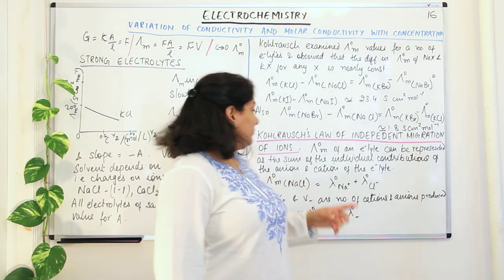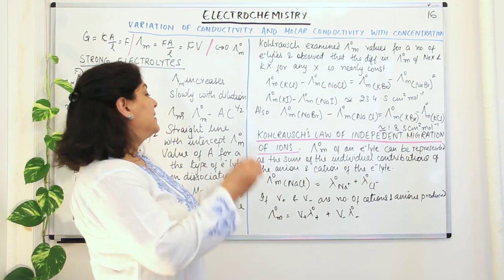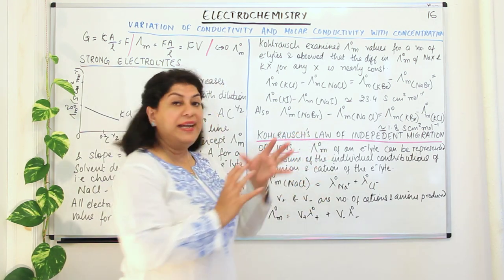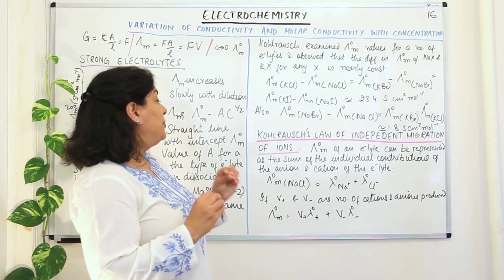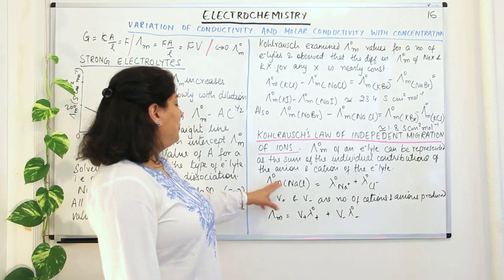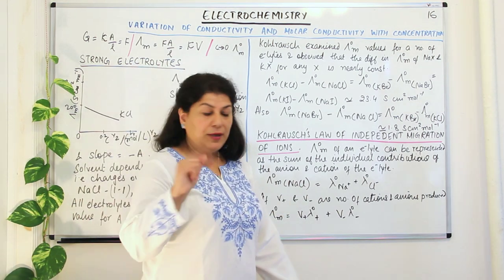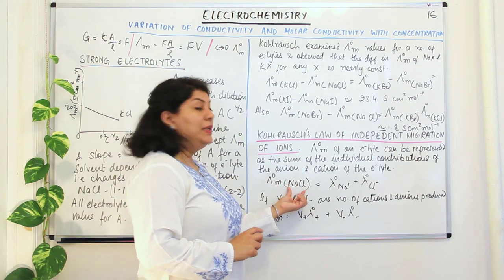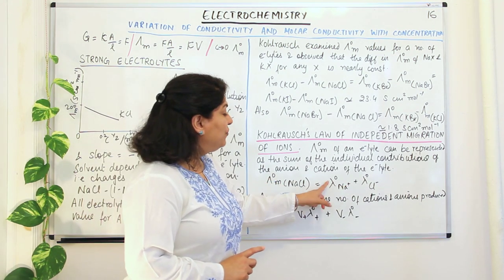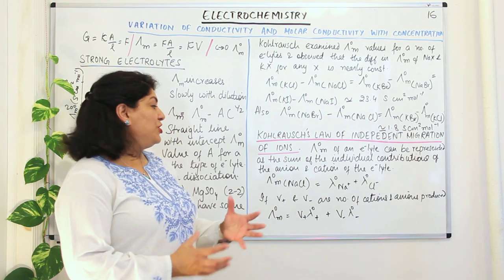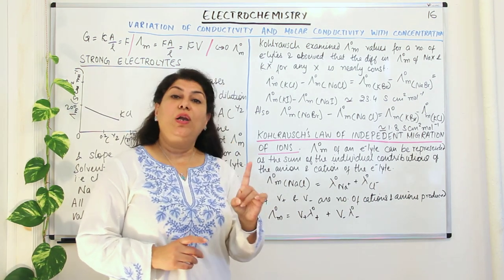This led Kohlrausch to give his law, known as Kohlrausch's Law of Independent Migration of Ions. Ions move around as electrolytes and carry electric current, and their conductivity is independent of the presence of other ions — each one is independent. The limiting molar conductivity of an electrolyte can be represented as the sum of the individual contributions of the anion and cation. Whenever we write the limiting molar conductivity of an ionic compound we use capital lambda, but for single ions we use small lambda.